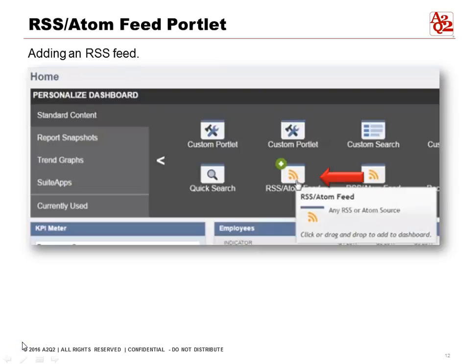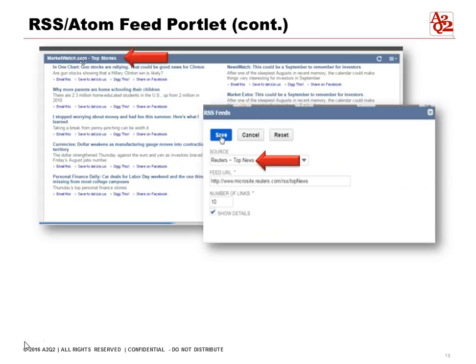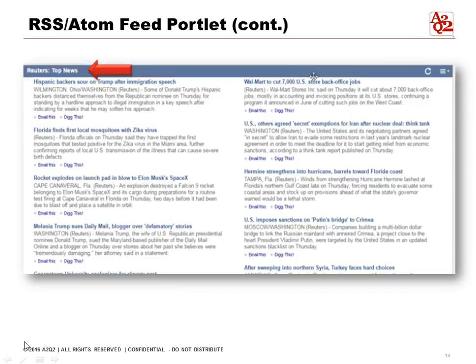We can also add an RSS feed. You can see it here and select it. NetSuite provides a default RSS feed from MarketWatch showing the top stories. We can set it up and change the source feed — we can have a custom one, so let's say Reuters as our source. We can add the file URL and put the number of links in there. Once we finish, it gives us the top stories from Reuters.